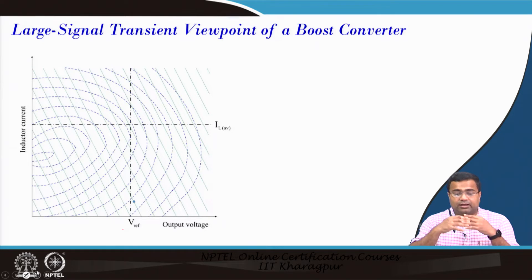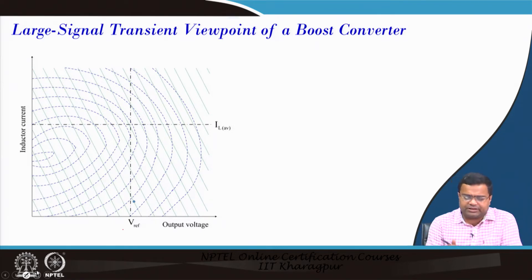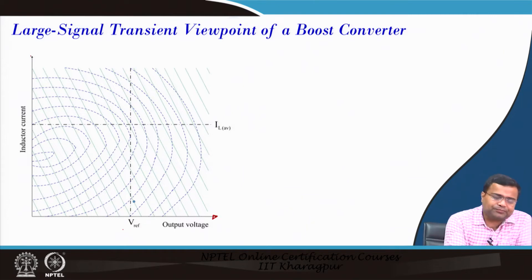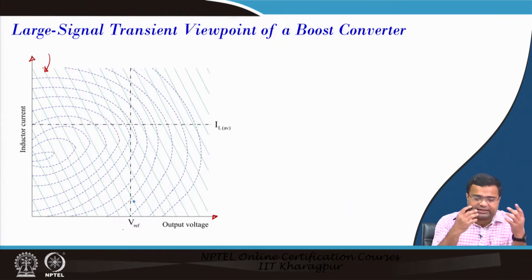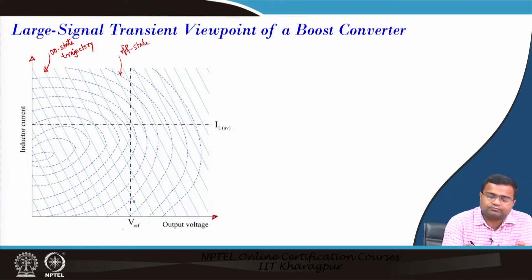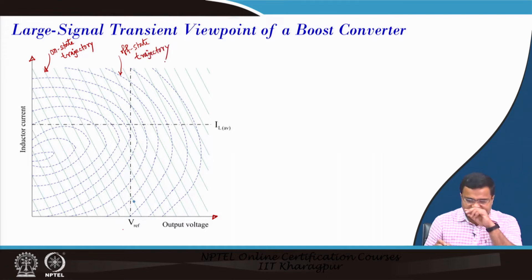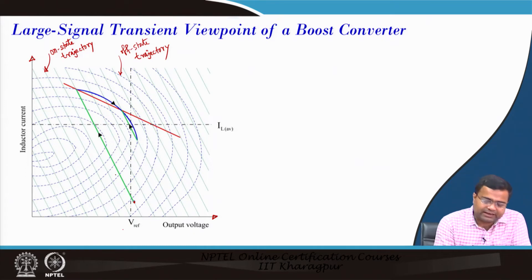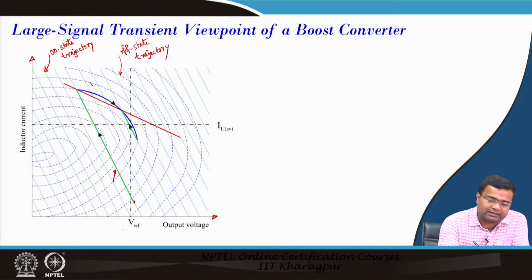We are going to start with the trajectory behavior of a boost converter. Here the x-axis is the output voltage and the y-axis is the inductor current. These lines indicate the family of curves: the on-state trajectories and the off-state trajectories. The green line is the on-state trajectory for a given initial condition when the switch is turned on. When it hits the red line the switch is turned off, and the blue line is the off-state trajectory, which then comes to steady state in an on-off operation.